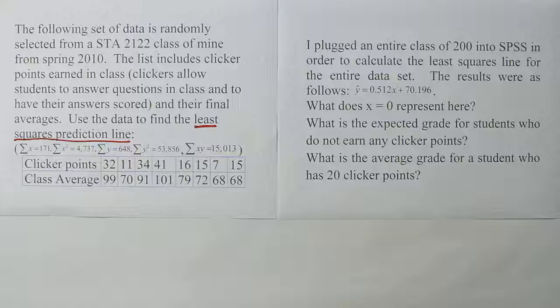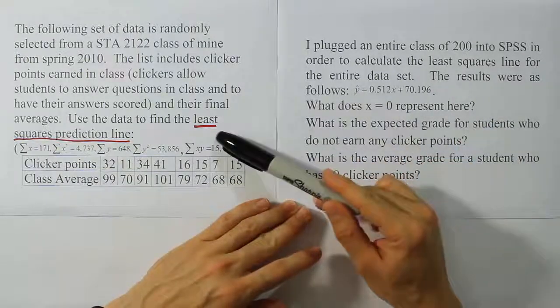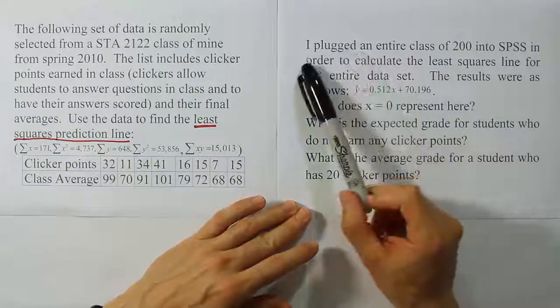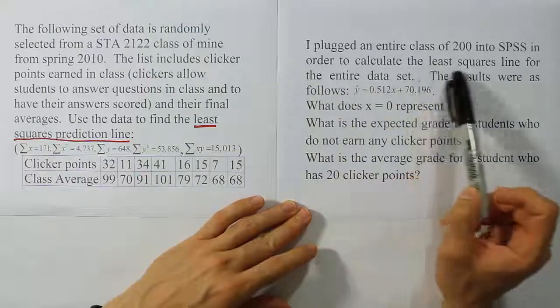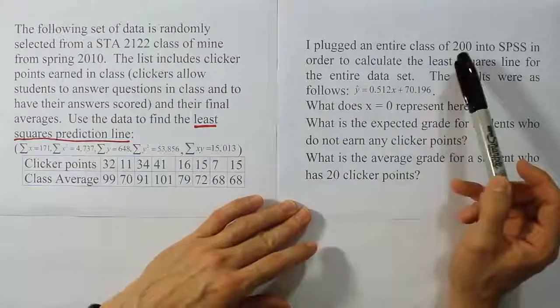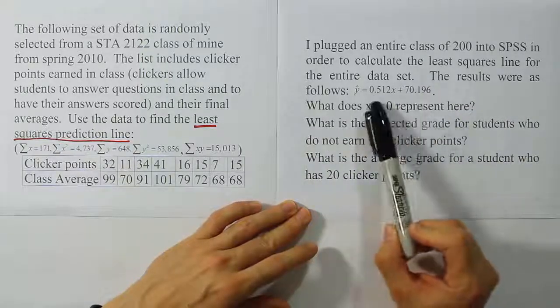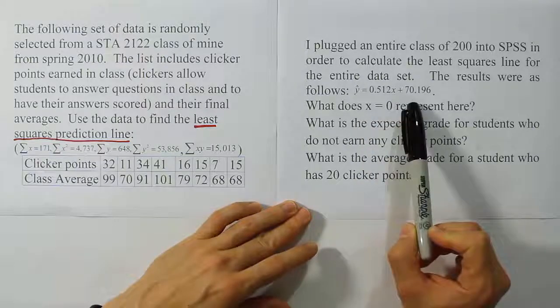Now it's time to answer the questions that were placed right next to this problem. Since we've created the least squares regression line here, our next thing is to answer this set of questions. It says, I plugged an entire class of 200 into SPSS in order to calculate the least squares line for the entire data set. The results were as follows. We have the following equation: Y-hat equals 0.512X plus 70.196.